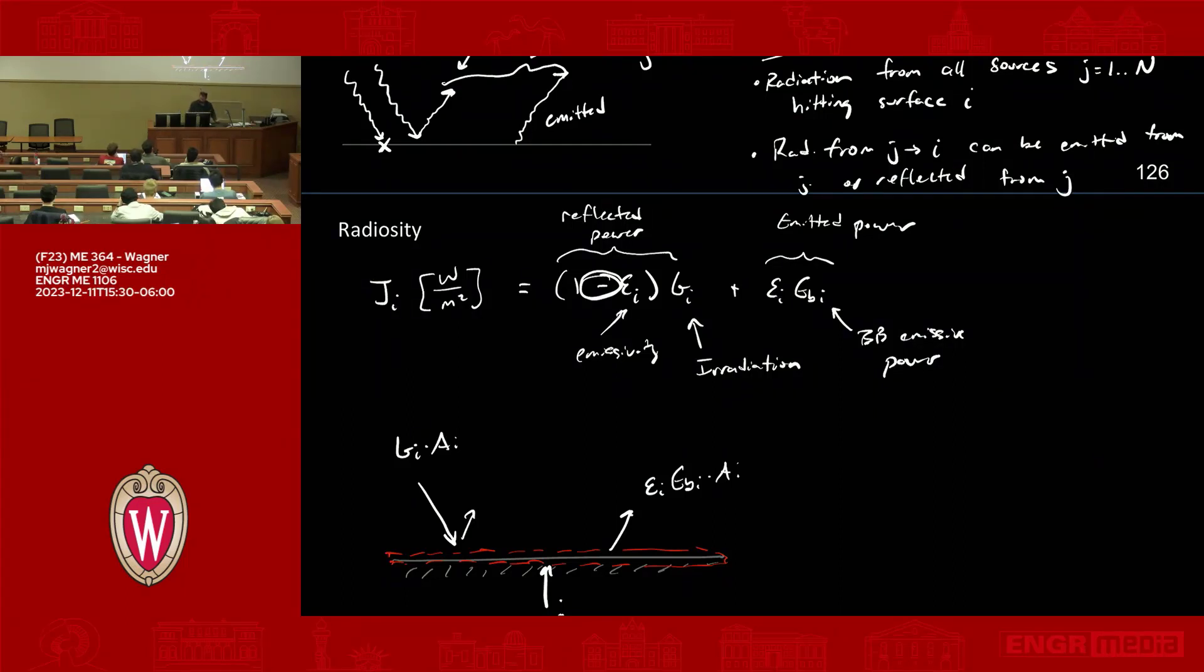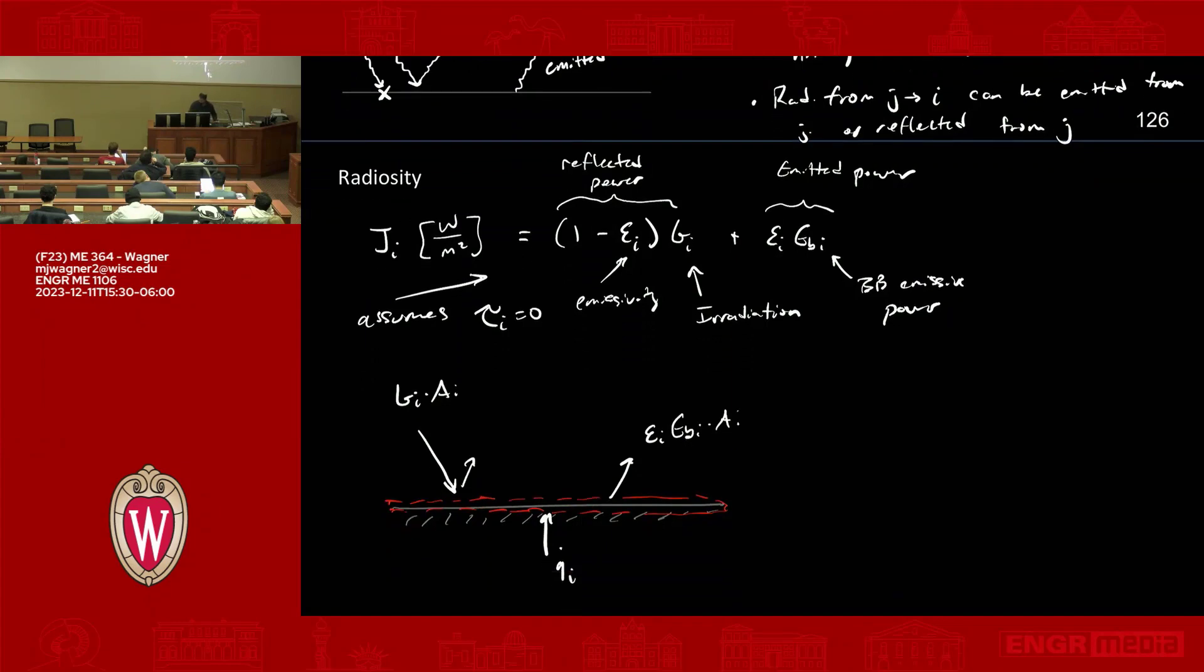So if we needed to include transmissivity this would have to be something else in here or you have to have that transmissivity term in here to capture that. Does that make sense? This equation assumes this whole thing assumes tau i equals zero. So it's like an energy balance basically. Other questions on this so far?